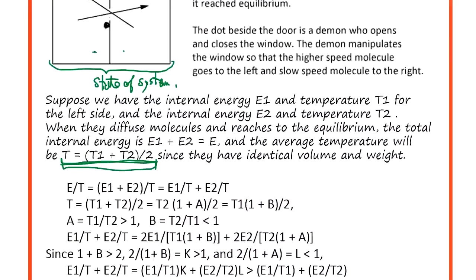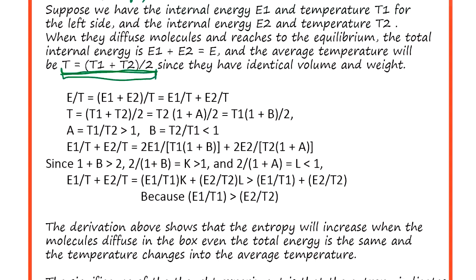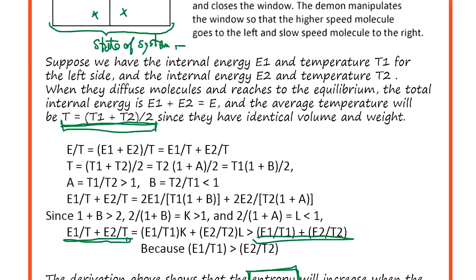So what is the change when we calculate the entropy for the average temperature? Suppose you have two different temperatures here, the same amount of the same type of gas, only difference is temperature. When they diffuse, molecules and reach equilibrium, the entropy increases. So entropy seems to be indicating something that energy and temperature cannot indicate. There is some additional state of system that can be expressed by entropy.